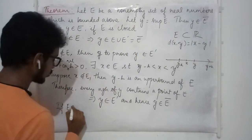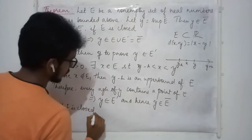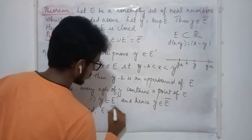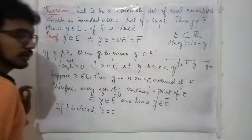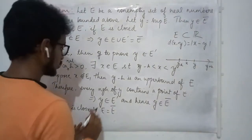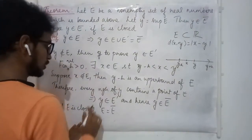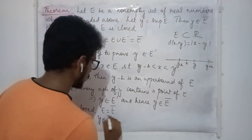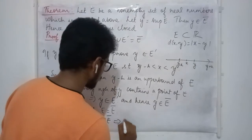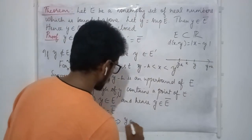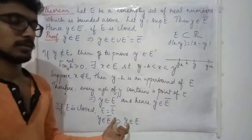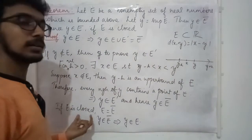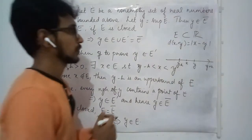If E is closed, then E and its closure are the same. So using this result, y in the closure of E implies y is in E itself. This is the conclusion whenever the set is closed.